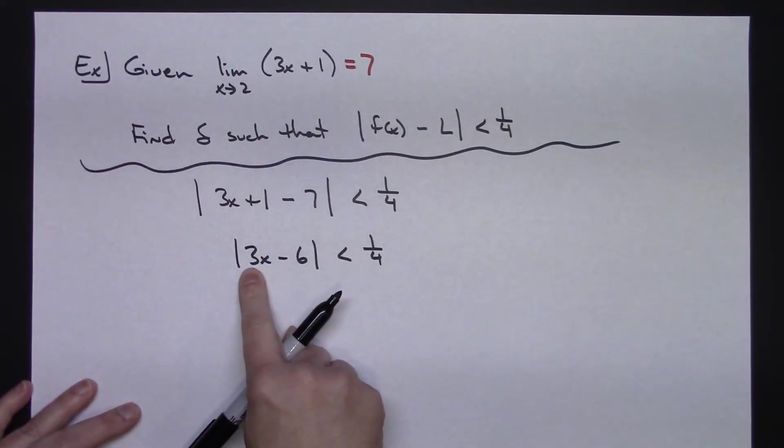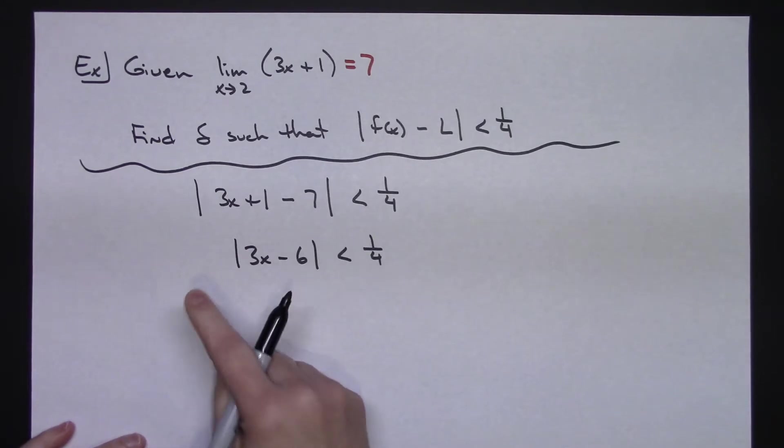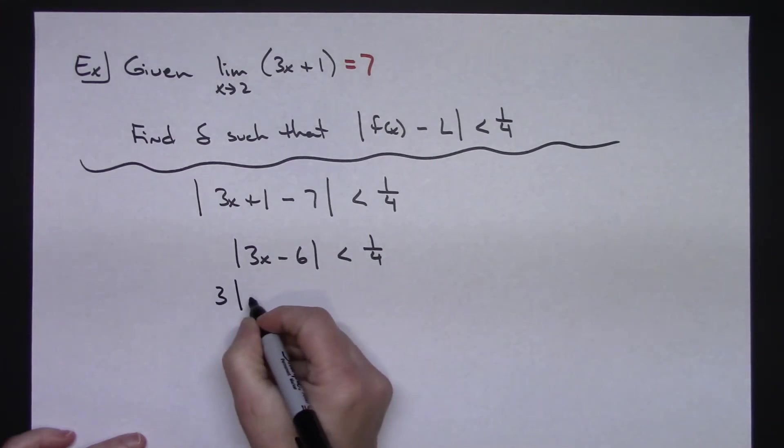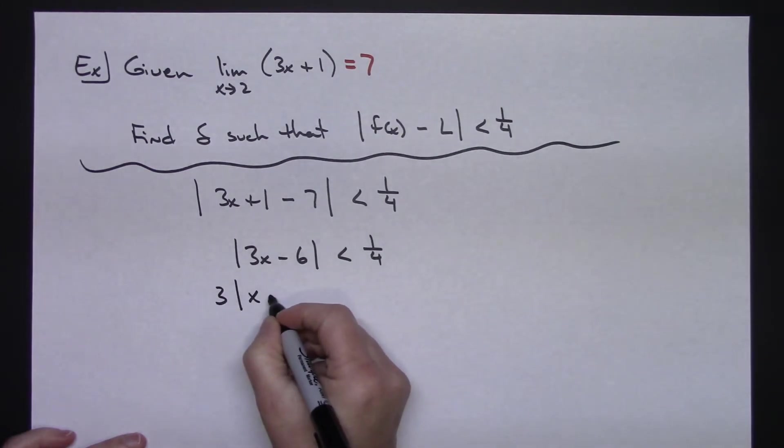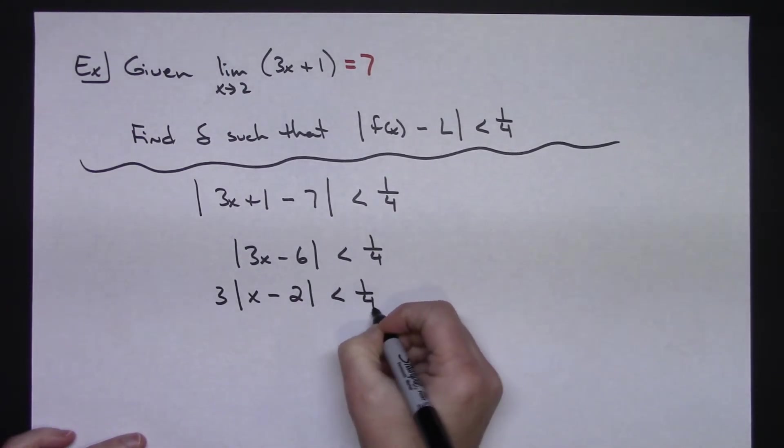So I'm going to go ahead and factor this. And when I factor this, I'm going to pull out a 3. Now, because the 3 is positive, when I pull it out, I don't necessarily have to have absolute value bars around it, you'll see it written both ways. So if I factor out a 3, then I would have an x minus 2 is less than 1 fourth.